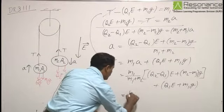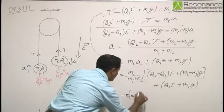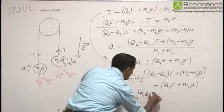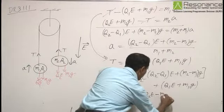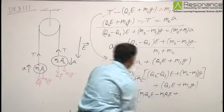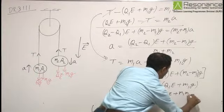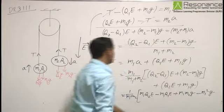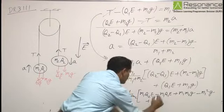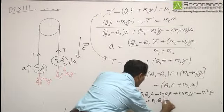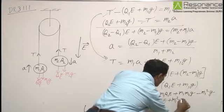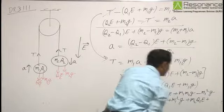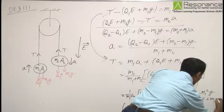If we now simplify this particular expression, we can write this to be equal to 1 over (M1 plus M2) times [M1Q2E minus M1Q1E plus M1M2g minus M1 squared g plus M1Q1E(M1 plus M2) plus M1 squared g plus M1M2g].